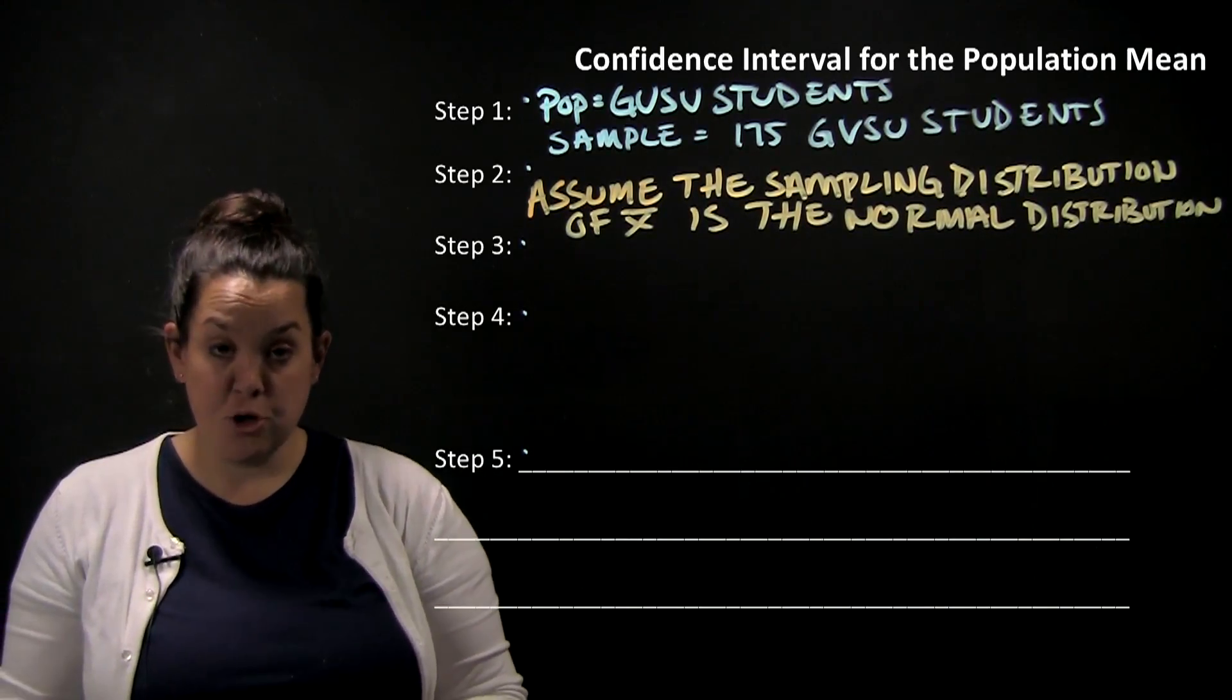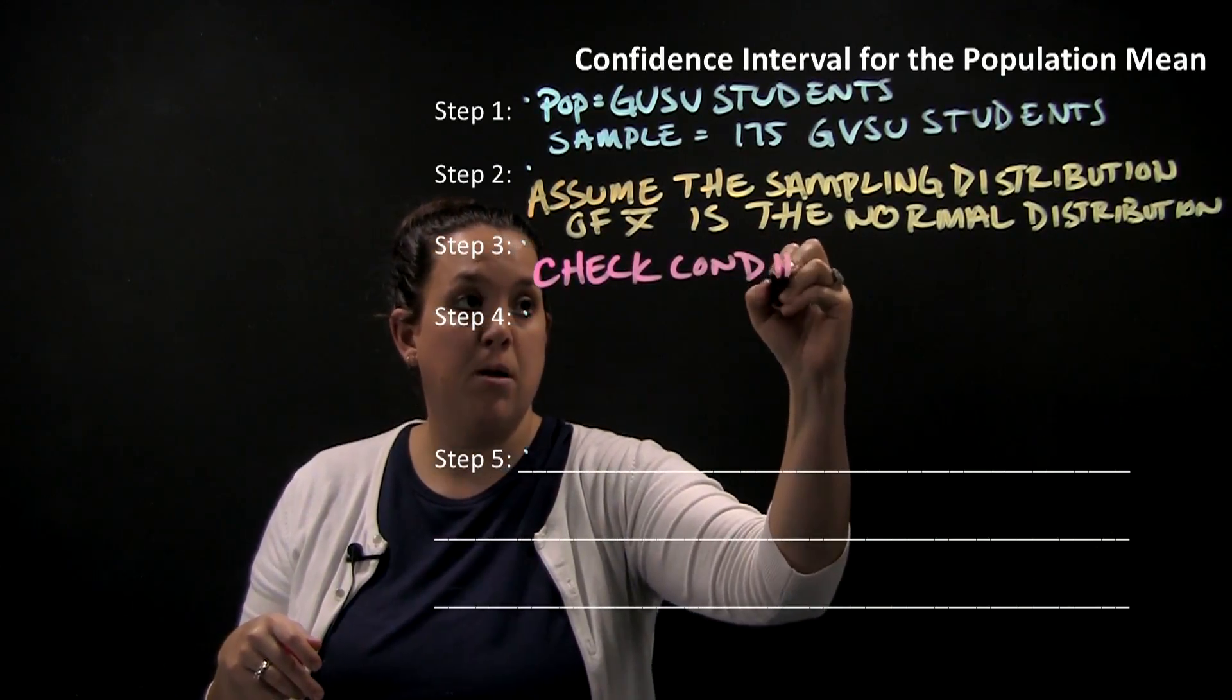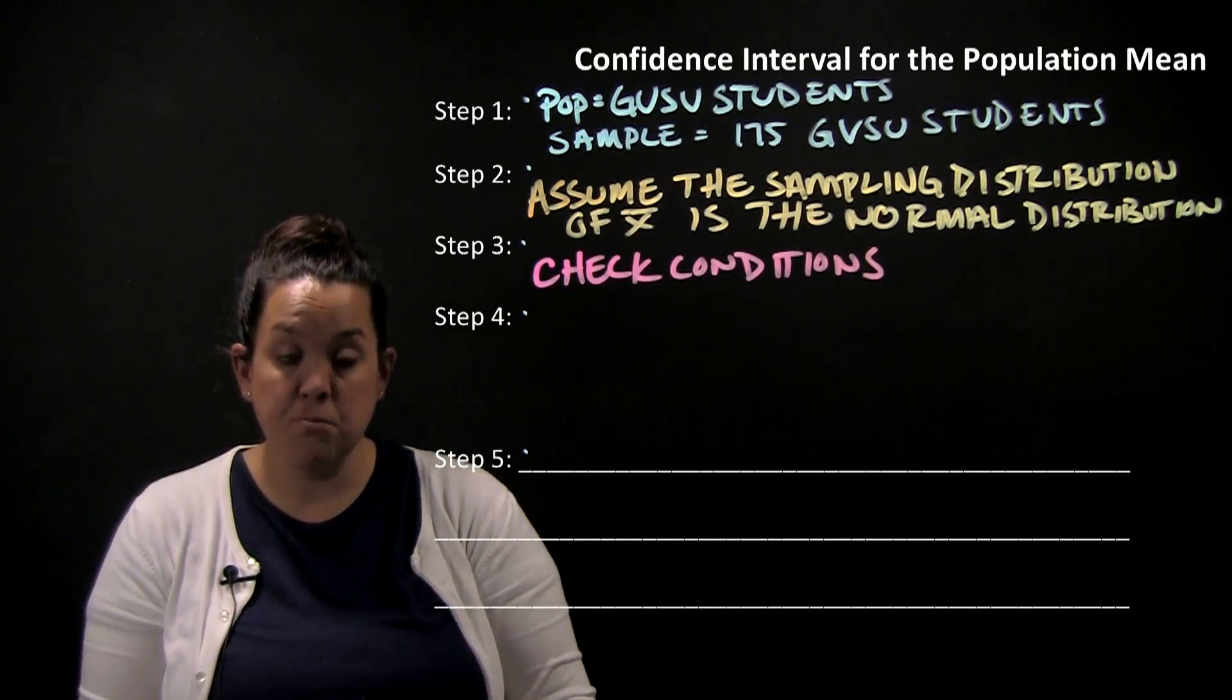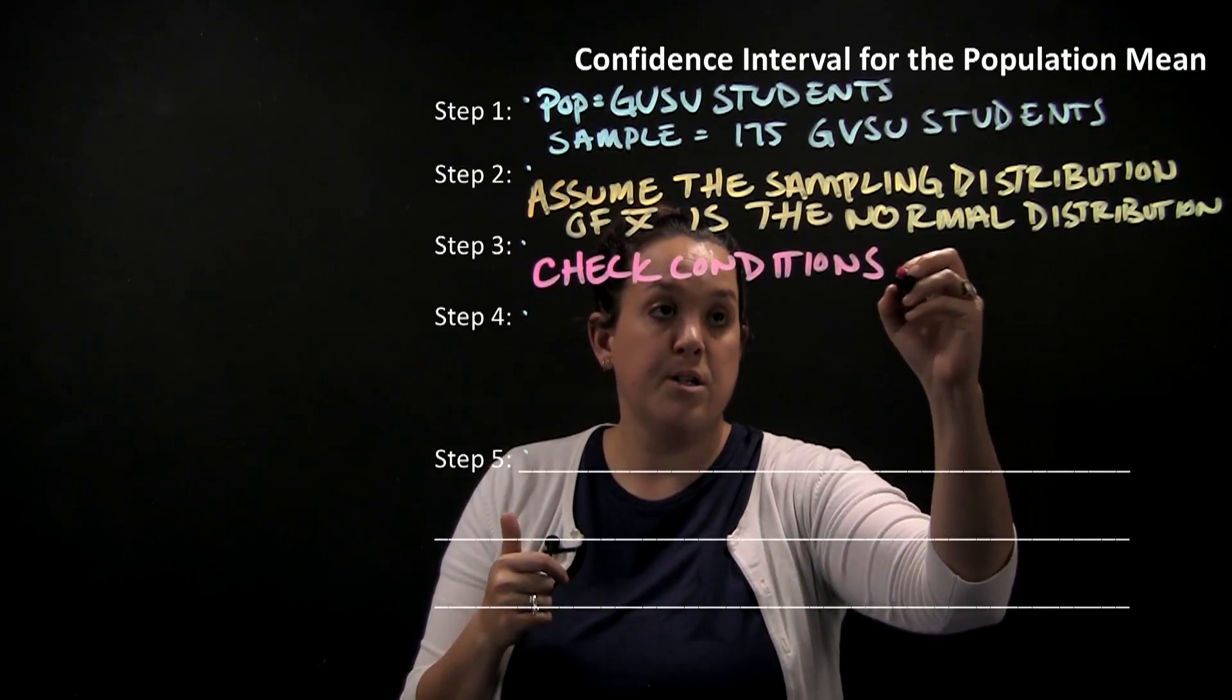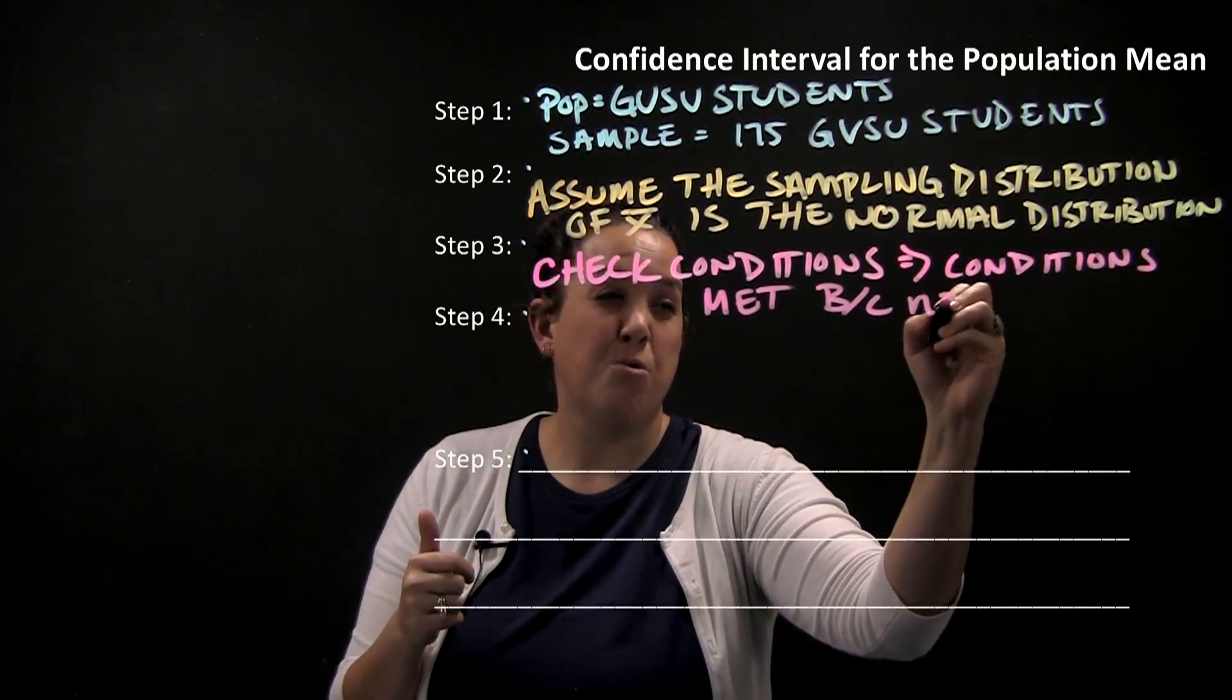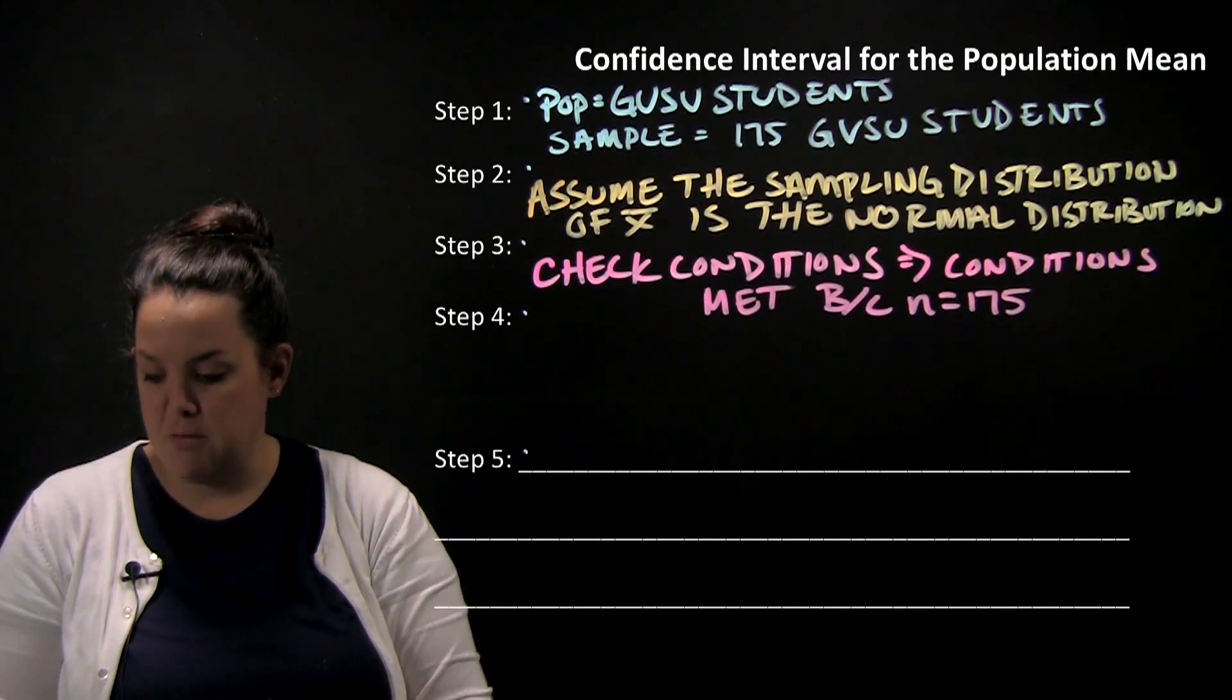Now we have to make sure that assumption is okay to make by doing what's called checking conditions in step three. To check conditions, it has to do with sample size and if there's presence of outliers. For this particular situation, because we have 175 as our sample size, our conditions are met because n equals 175, which is essentially large enough. So even if we have some extreme outliers, it's not going to be a big deal because the sample size is large enough to handle those.